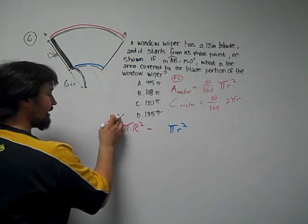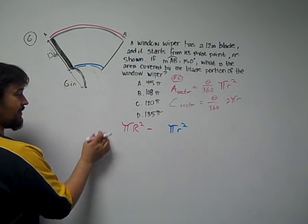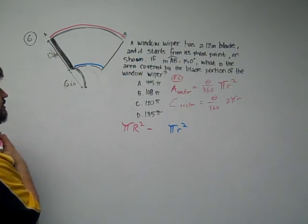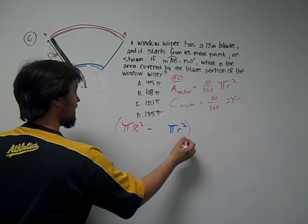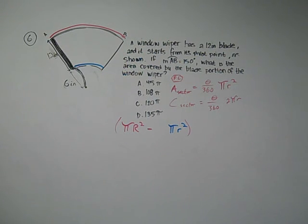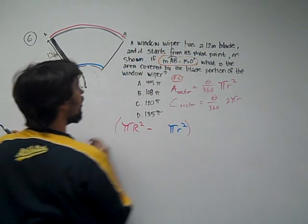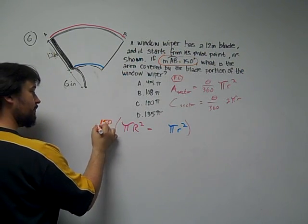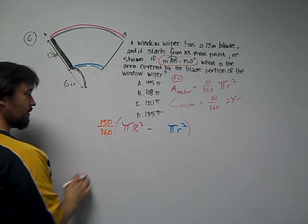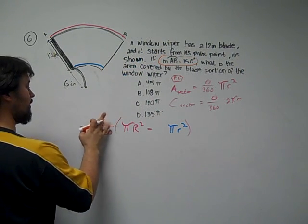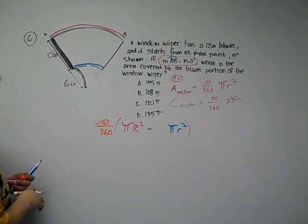So I can do one of two things. I can either put parenthesis here and multiply the entire thing by theta over 360 or put theta over 360 in two different places. I'm going to go ahead and multiply the entire thing out front by theta over 360, or 150 over 360. And that's in the generic form.